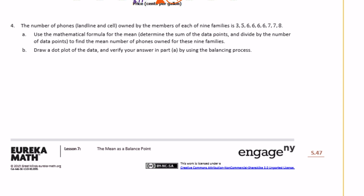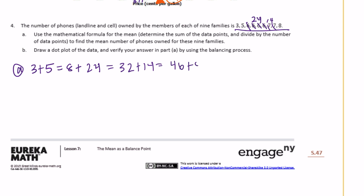Number four: the number of phones owned by nine families is given. Part A uses the mathematical formula — add all data points and divide by the number of data points. Adding the values: three plus five is eight, four sixes is twenty-four, giving thirty-two, plus fourteen is forty-six, plus eight is fifty-four. Dividing fifty-four by nine gives six, so the mean is six phones owned by the families.